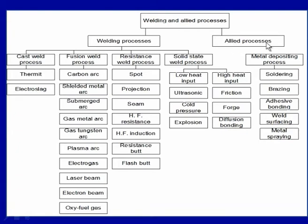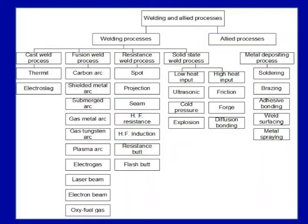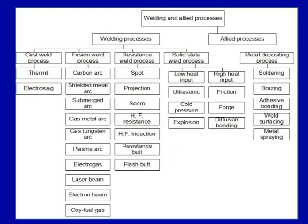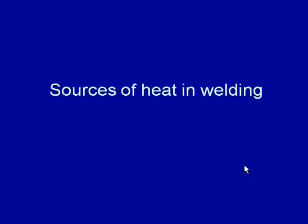Under the allied welding processes — where some sort of deposition of metal or material is carried out either to get a joint or improve surface characteristics — we have soldering, brazing, adhesive bonding, weld surfacing, and thermal spraying. Heat plays a very important role in the development of the weld joint across all welding processes, whether used for melting the faying surfaces, softening the metal components, or facilitating diffusion. Heat is applied in different ways during welding for different purposes.